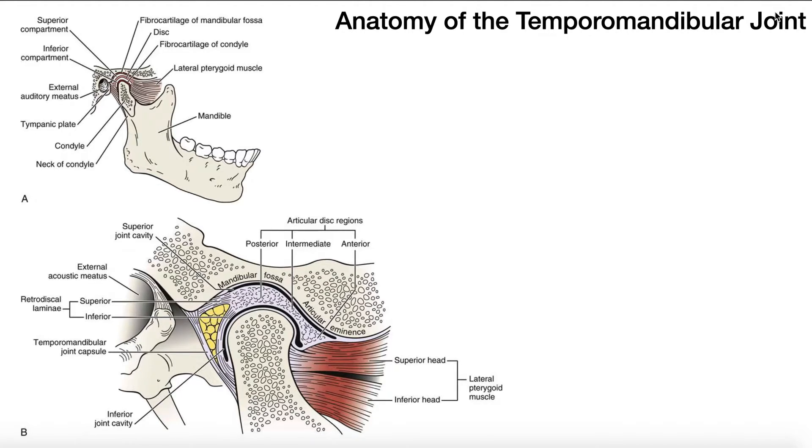We talked about the masseter, the temporalis, and I mentioned the pterygoids. We're going to see these in a little more detail in future videos. They're kind of small muscles and they're deep to the masseter.